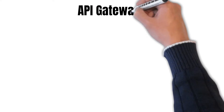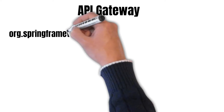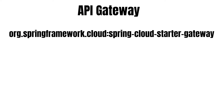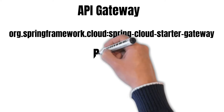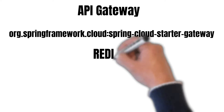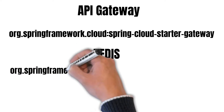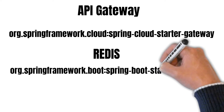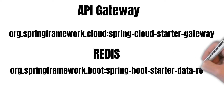For using the API gateway, we use the spring-cloud-starter dependency provided by Spring Cloud. And for using Redis, we use the spring-boot-data-redis dependency provided by Spring Boot.